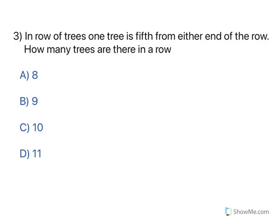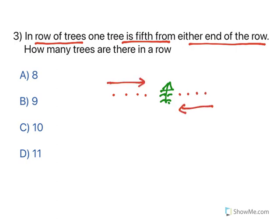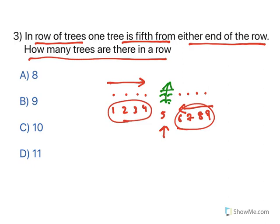Moving to the next one. In a row of trees, one tree is fifth from either end of the row. There is a row — 1, 2, 3, 4 and then the tree. From the other end also you count 1, 2, 3, 4. You count from this side it comes as 5, you count from the other side it also comes as 5. So how many trees are there? 1, 2, 3, 4 — this is the fifth one — 6, 7, 8, 9. Totally 9 are there: 4 from this side, 4 from that side, and 1 in the middle. Read the question properly, draw it, and you will get the answer.